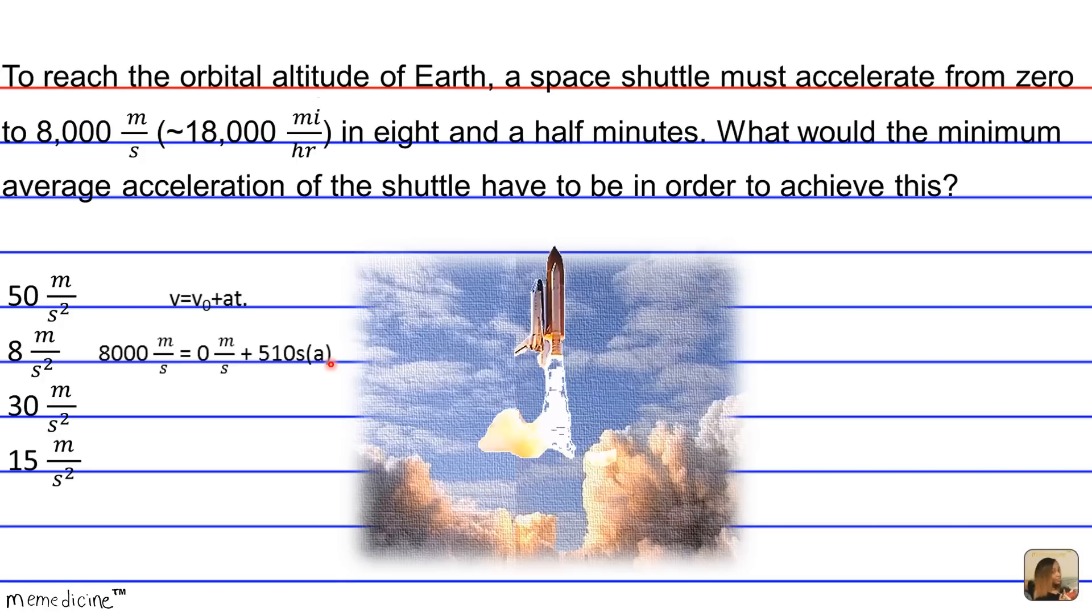Because we don't have a calculator on the MCAT, you can just approximate 500 and ask yourself, what do you have to multiply by 500 in order to get 8,000? And that's basically 16, and the closest answer we have to that is 15 meters per second squared.